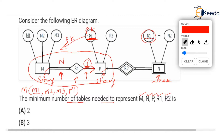So table M is one table. The other table created is P, for the strong entity P, with attributes P1 (underlined as primary key) and P2. Nothing will be transferred to this entity P.